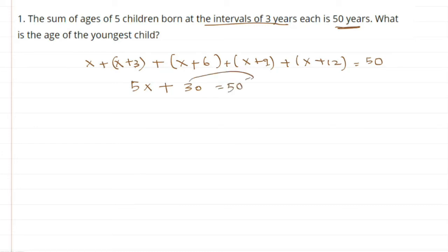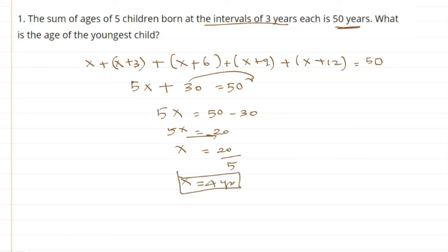This 30 goes to the other side, so 5x equals 50 minus 30. 5x equals 20. x equals 20 divided by 5. So x equals 4 years. From this we know that the age of the youngest child is 4 years.